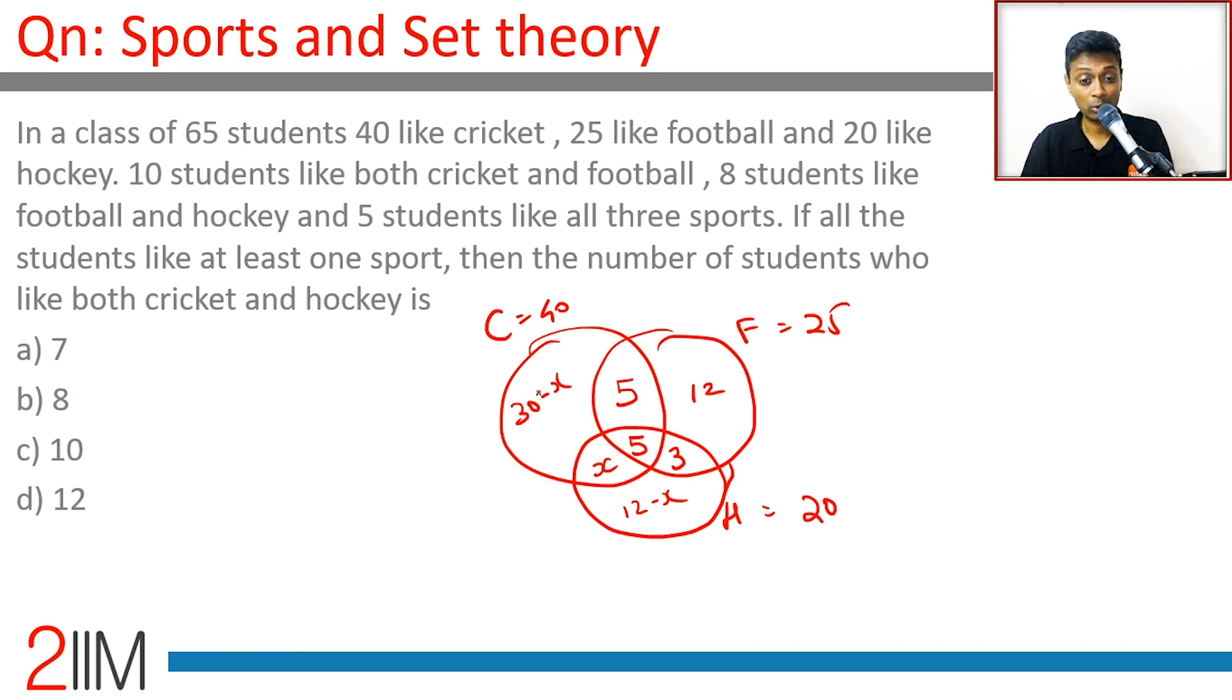The total, I am going to add this everything up. That is 40 plus 12 plus 3 plus 12 minus x. That should be 65. I am just adding all this up, that is 40, then 12, 3, 12 minus x.